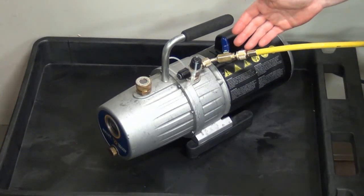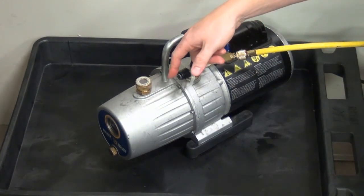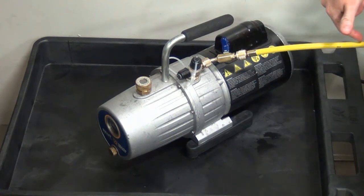Following these best practices will keep the vacuum pump oil in the pump where it belongs and out of your hoses and gauges.